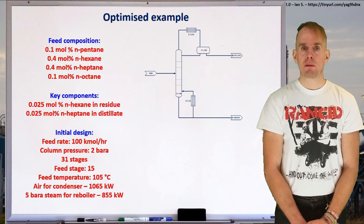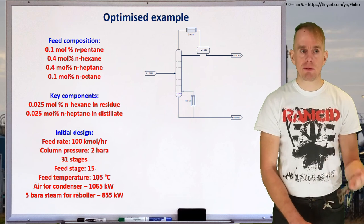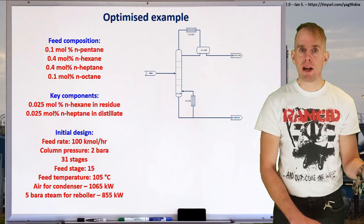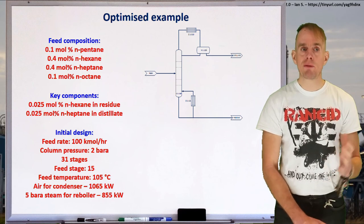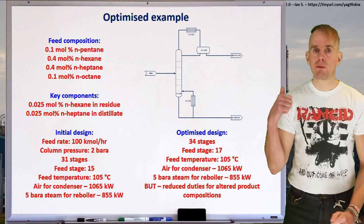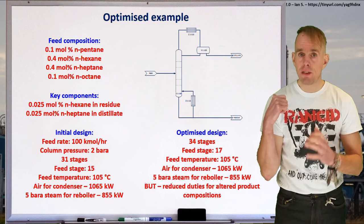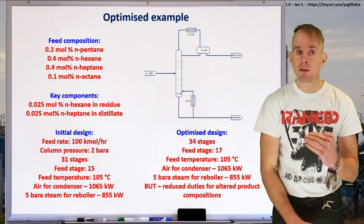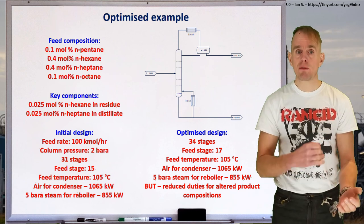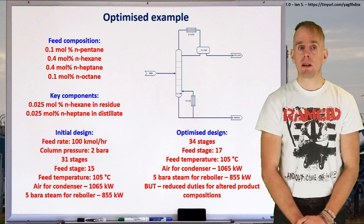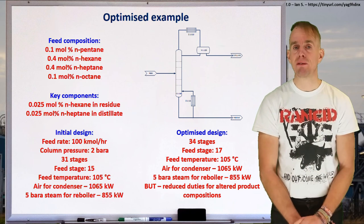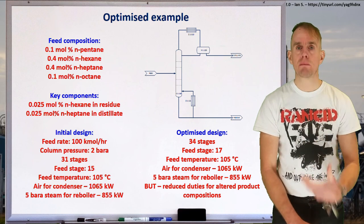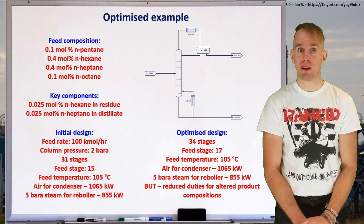Let's have a look at what our optimised example looked like. We started with a certain feed composition and key component specifications, we varied those specifications, and evolved our initial design to a final design. It hasn't changed by that much in this particular example — we've increased the stage count by three, shifted the feed position slightly, and managed to keep the operating duties about the same, because coincidentally the initial design was fairly close to being pretty good — not always the case by any means.